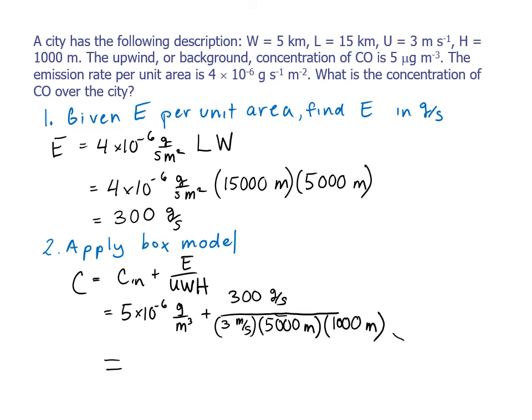And I get 2.5 times 10 to the minus 5 grams per cubic meter. We should put this into some more reasonable units. Since the upwind background concentration was given in micrograms per cubic meter, that would be a good place to go. So our conversion is 10 to the 6 micrograms per gram. And we get 25 micrograms per cubic meter.